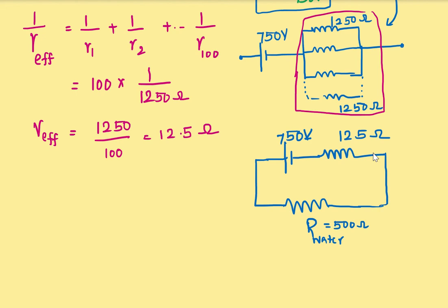So let's calculate the current now. I equals E divided by R plus R. This is voltage divided by resistance. So we write, we have 750 divided by this R is 12.5.